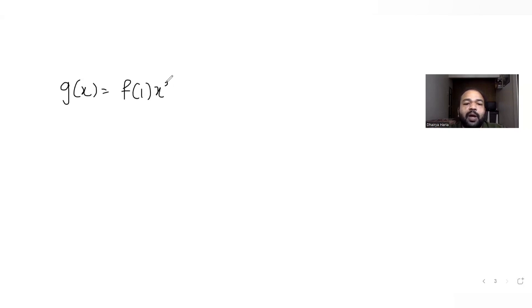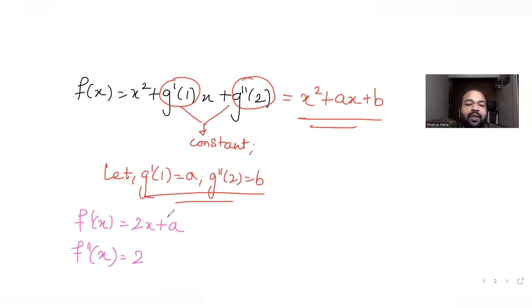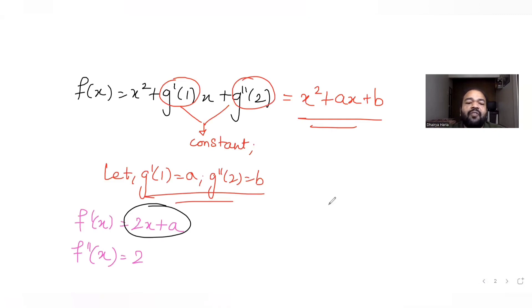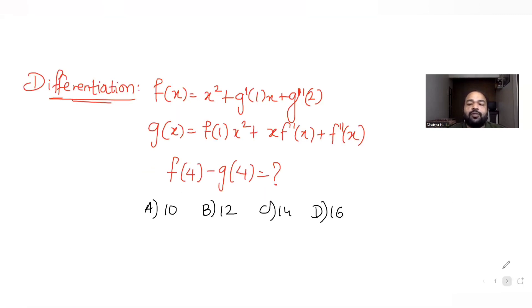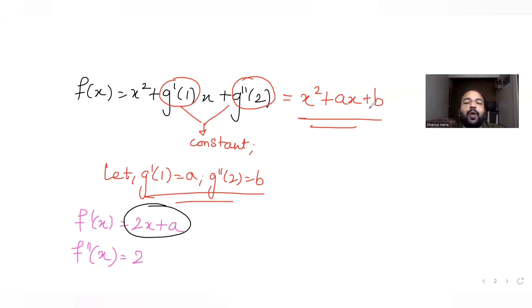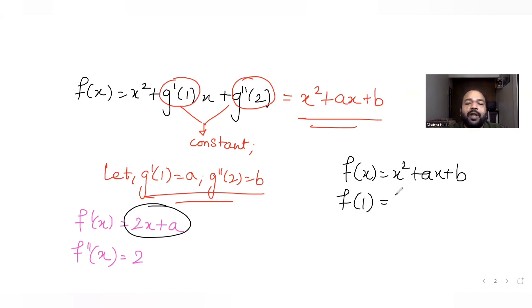Now let's substitute into g(x) = f(1)·x² + x·f'(x) + f''(x). We already know f'(x) = 2x + a and f''(x) = 2. To find f(1), I put x=1 in f(x) = x² + ax + b, giving 1 + a + b. So f(1) = a + b + 1.